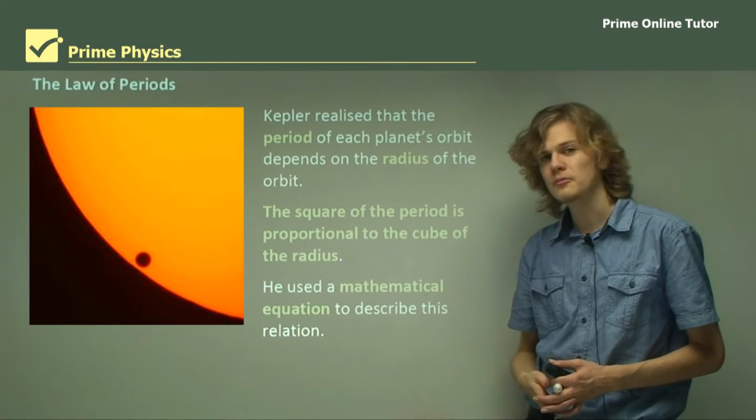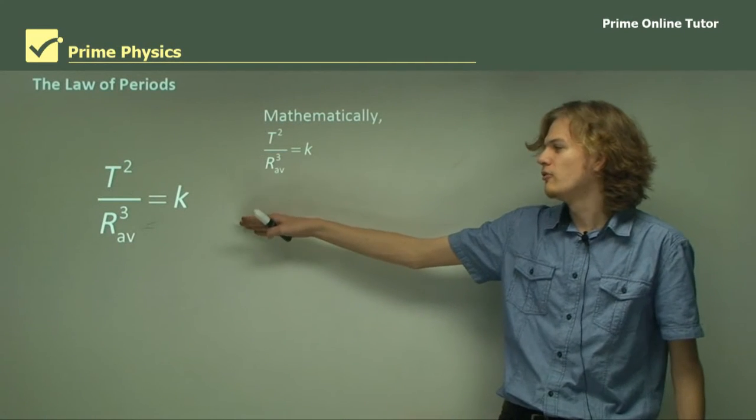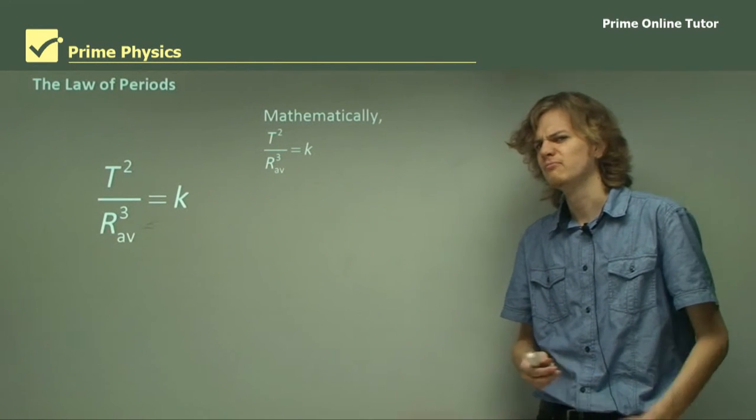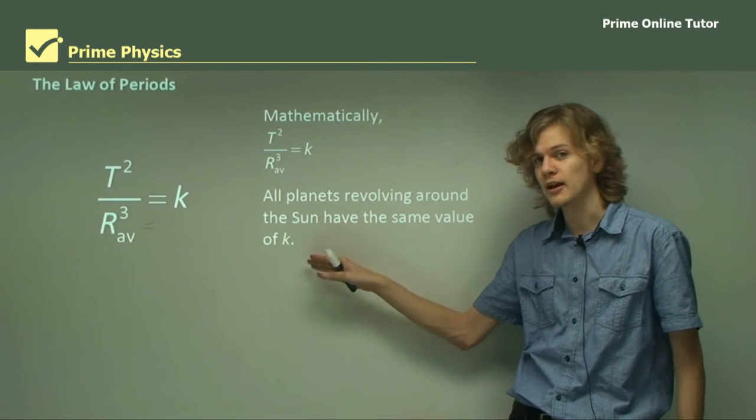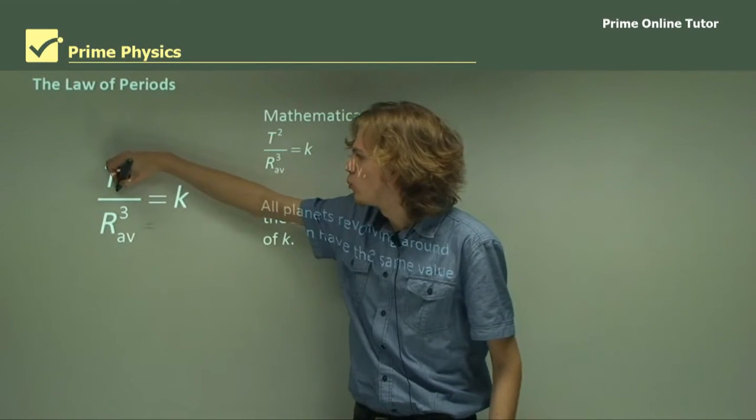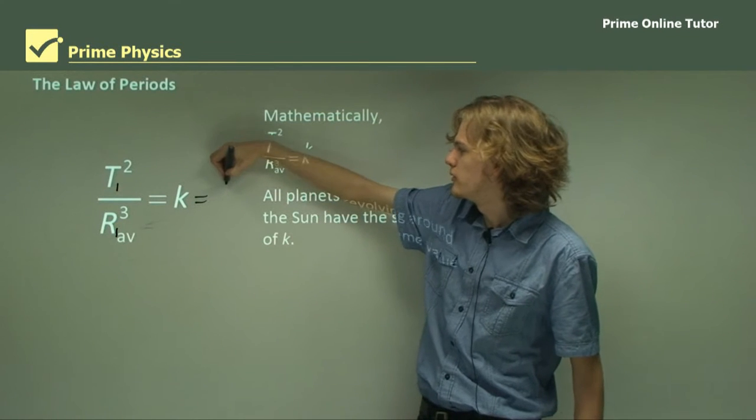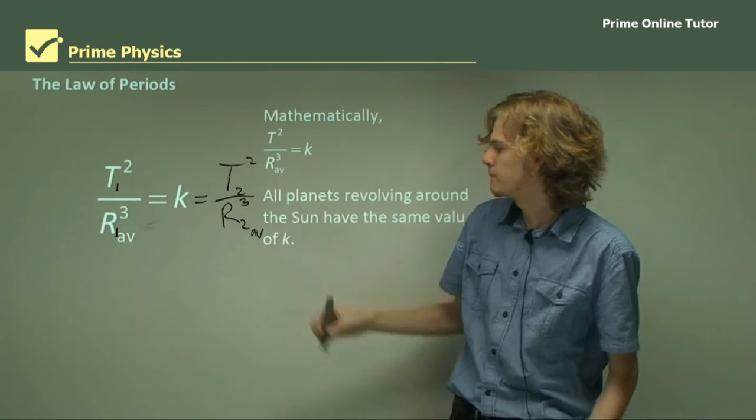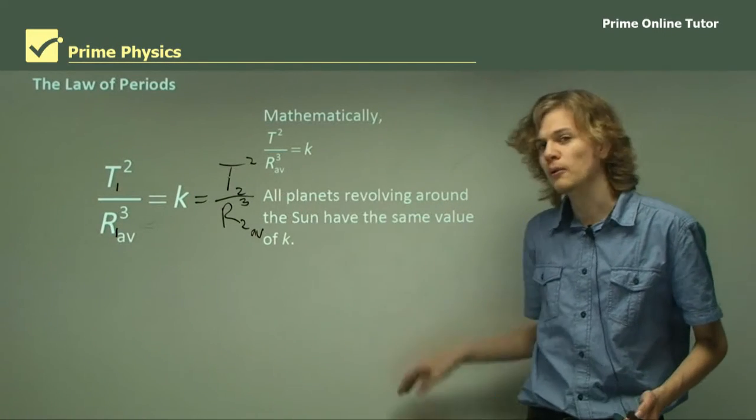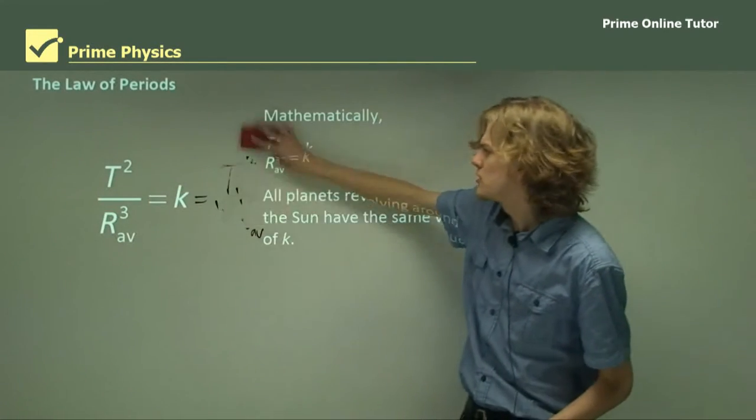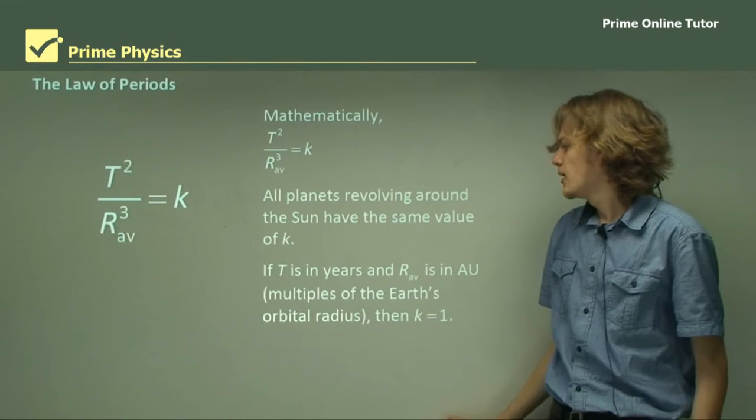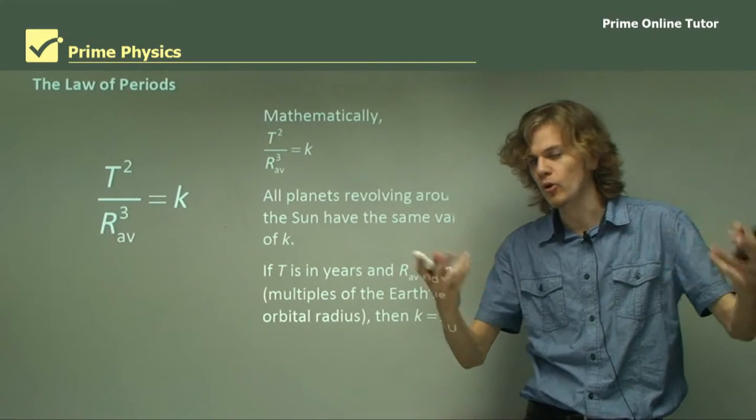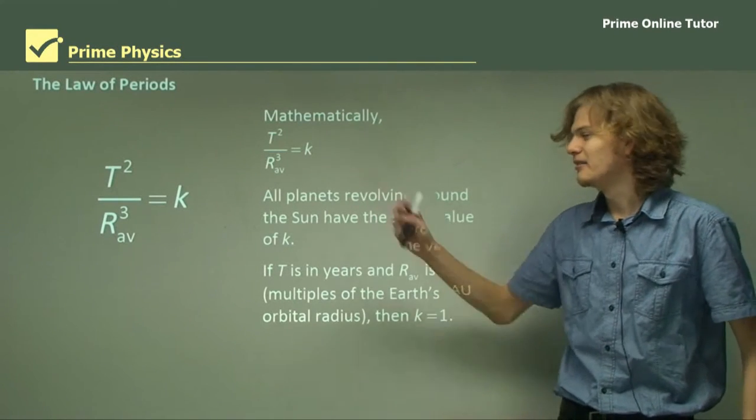He used a mathematical equation to describe this relation: the period squared over the radius cubed equals K. He used a capital R for radius because planets are very big things. All planets revolving around the sun have the same value of K. It's possible to compare different planets using this as well. However, if T is in years and the radius is in astronomical units, or AU, that is multiples of the Earth's distance from the sun, then K simply equals 1, which makes it a very easy rule to follow.